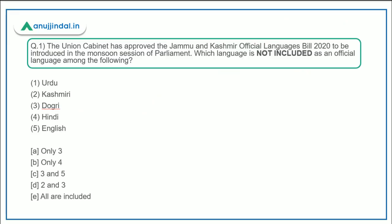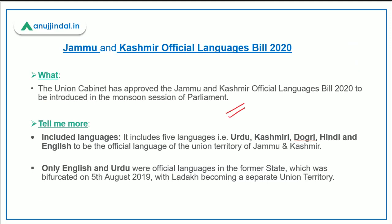Let's start with question number one about the Jammu and Kashmir Official Languages Bill 2020. The union cabinet recently approved this bill, which is to be introduced in the monsoon session of parliament. The question is: which language is not included as an official language of the union territory of Jammu and Kashmir? Under this bill, five languages are included — Urdu, Kashmiri, Dogri, Hindi, and English.